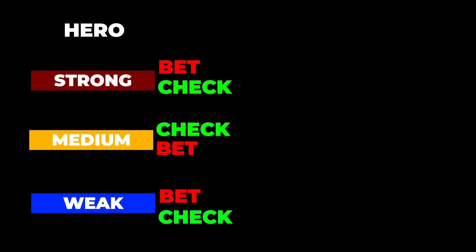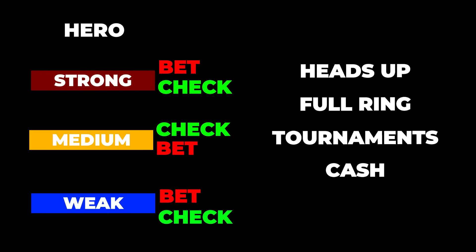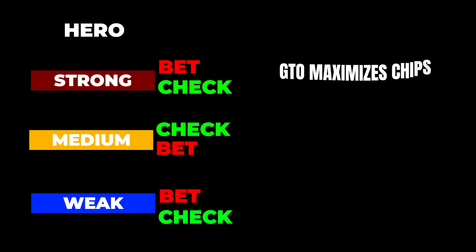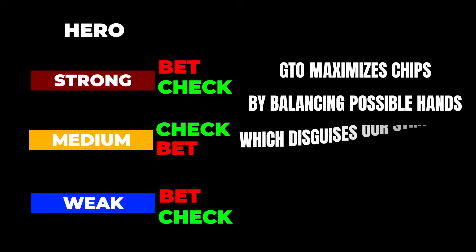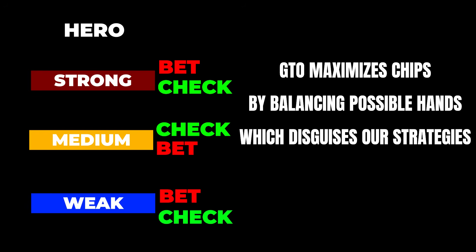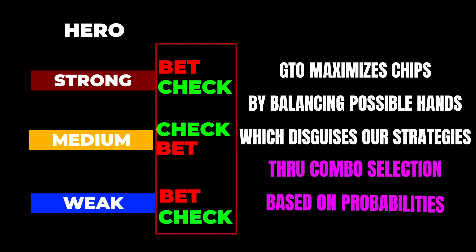And that is about it. What we've just described in a nutshell is essentially how every single GTO strategy is constructed — it doesn't matter if it's heads up, full ring, MTT, or cash. GTO is mainly about maximizing chips by balancing our strong, medium, and weak hands in a way that makes our holdings and strategies very disguised and difficult, if not impossible, to take advantage of. The key in terms of practical application all comes down to combo selection: knowing which hands to fit within which bucket depending on their specific characteristics.